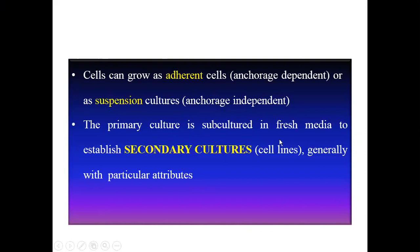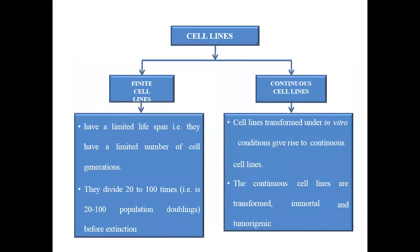The primary culture is subcultured in fresh media to establish secondary cultures, which are known as cell lines. Cell lines are of two types: finite cell lines, which have a limited lifespan, and continuous cell lines, which grow continuously in vitro.